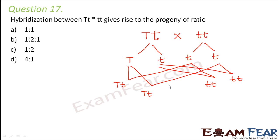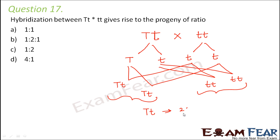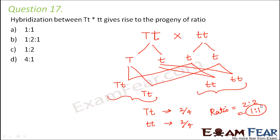So what is the ratio of the progeny? We have 2 out of 4 capital T small t, and 2 out of 4 small t small t. So the ratio is 2:2, which is basically 1:1. Option A is the right answer.